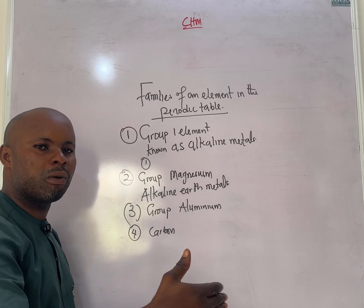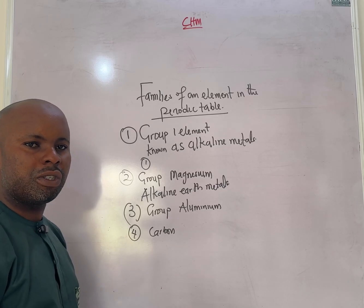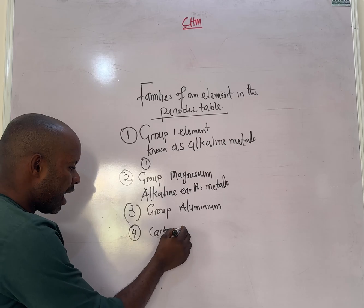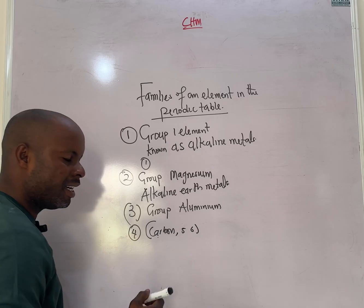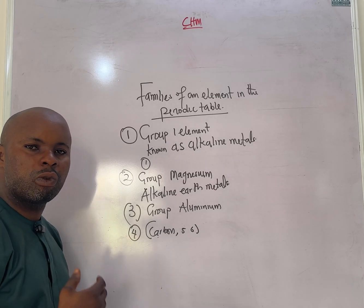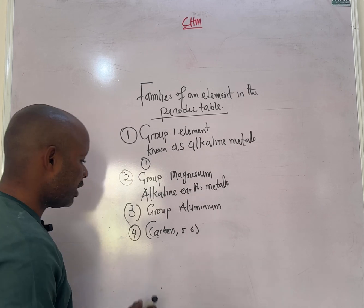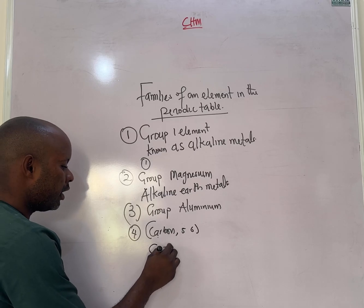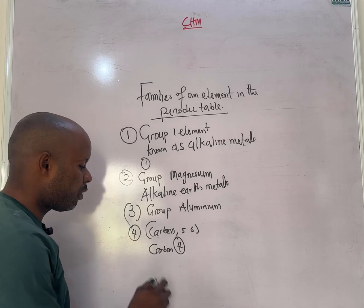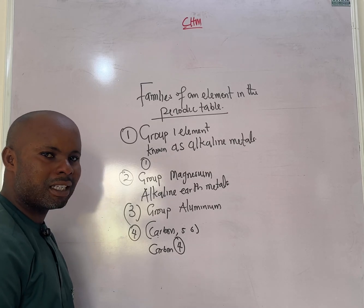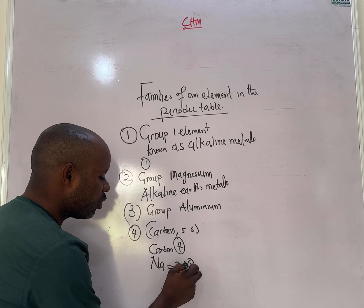As you move towards group eight you notice that reactivity becomes reduced. Every element tends to want an octet structure — eight electrons in the outer shell. For carbon to release its four electrons would be very hard compared to sodium, which has the configuration 2,8,1, making it very easy for sodium to release that one electron to a participating species.